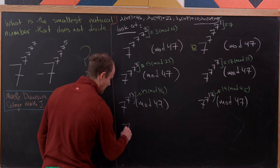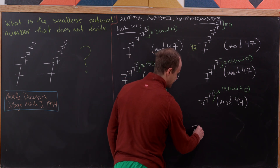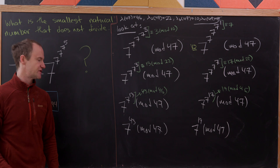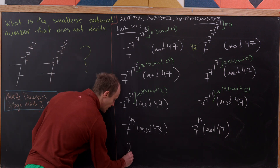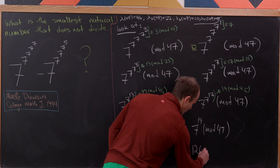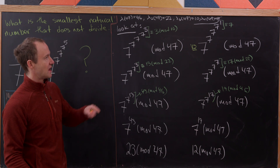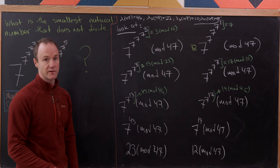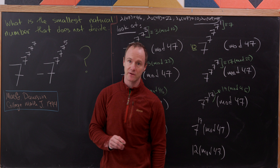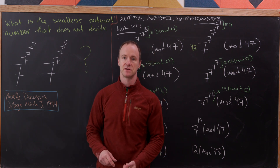Computing the final values: 7^43 mod 47 = 23, and 7^19 mod 47 = 12. Since 23 ≠ 12, our two original power towers are incongruent mod 47, meaning their difference is not divisible by 47. And since no smaller natural number fails to divide this difference, 47 is the answer. That's a good place to stop.